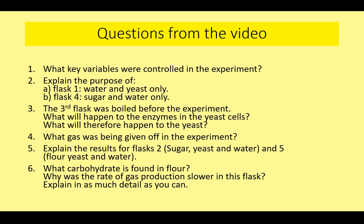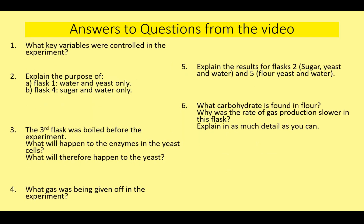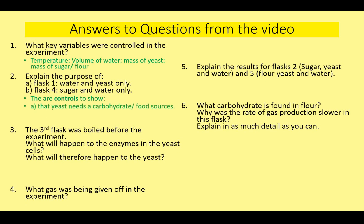Key controlled variables include temperature, volume of water, mass of yeast and sugar or flour used, and using the same balloons. The experiment includes two control flasks — one with yeast and water only, one with sugar and water only. The yeast-only flask shows yeast needs a carbohydrate food source to respire. The sugar-only flask shows that sugar alone doesn't break down and give off carbon dioxide — that's why you have controls.